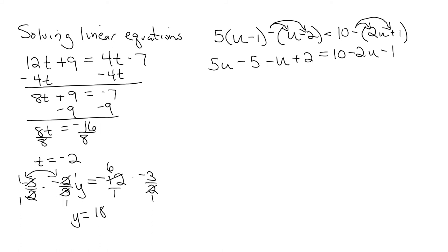On both sides, let's combine like terms. We have a 5u minus u, which is 4u. Negative 5 plus 2 is a negative 3, which is equal to... I'm going to put the variable term first. And then you just have 10 minus 1, which is plus 9.